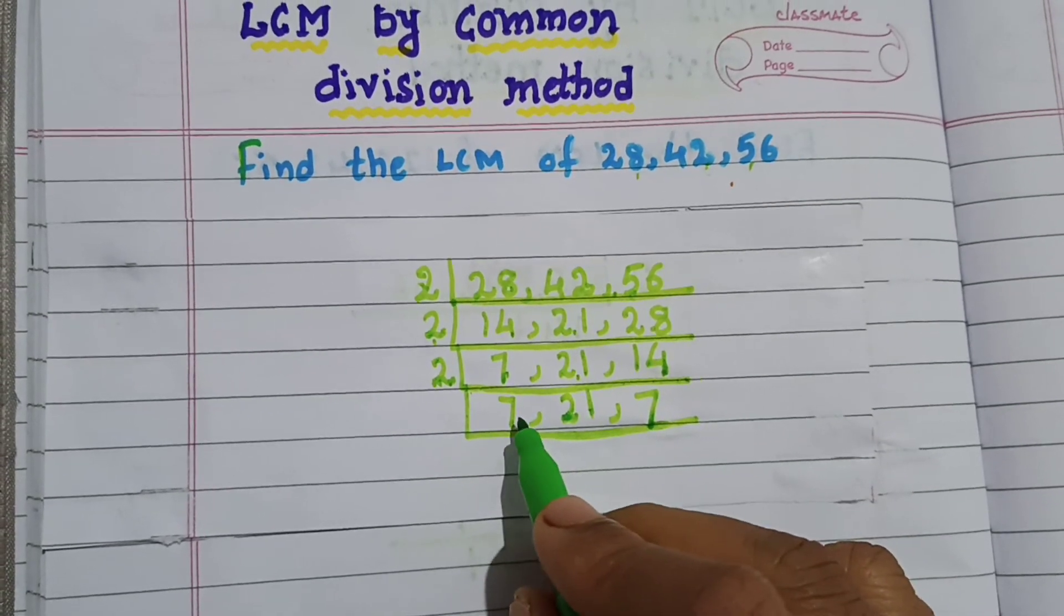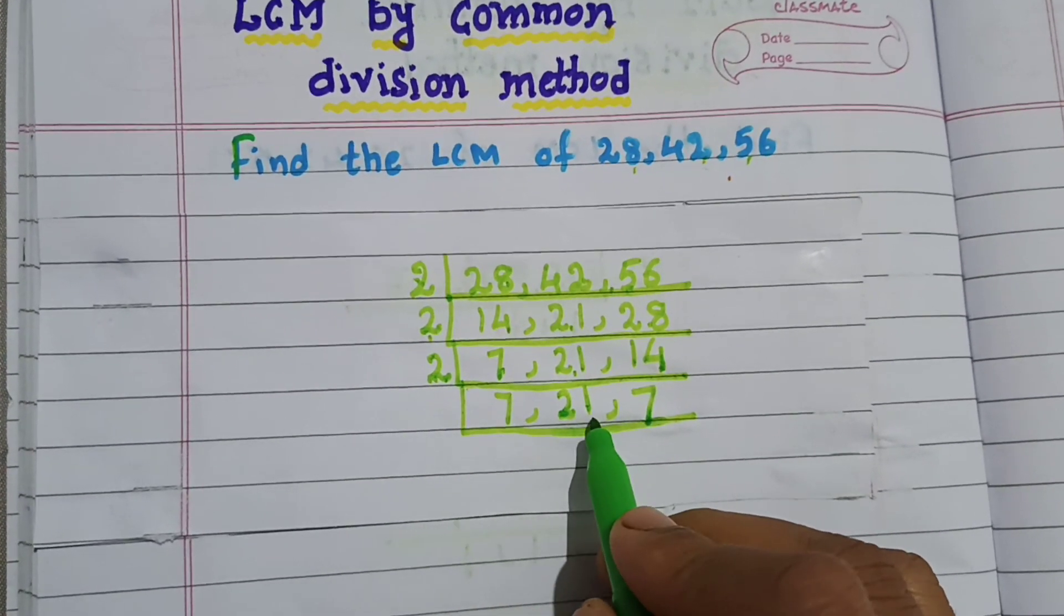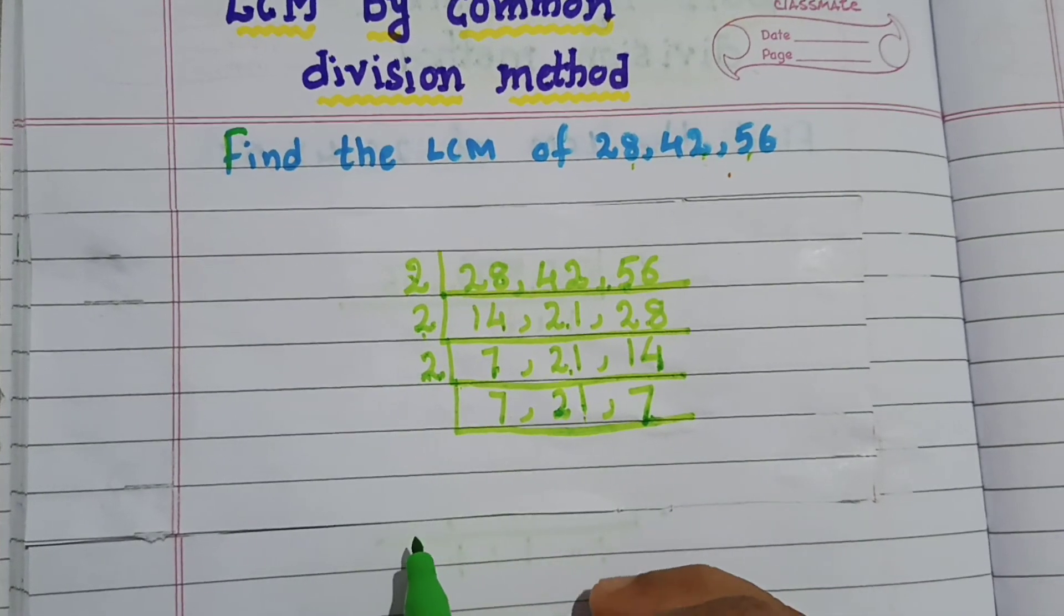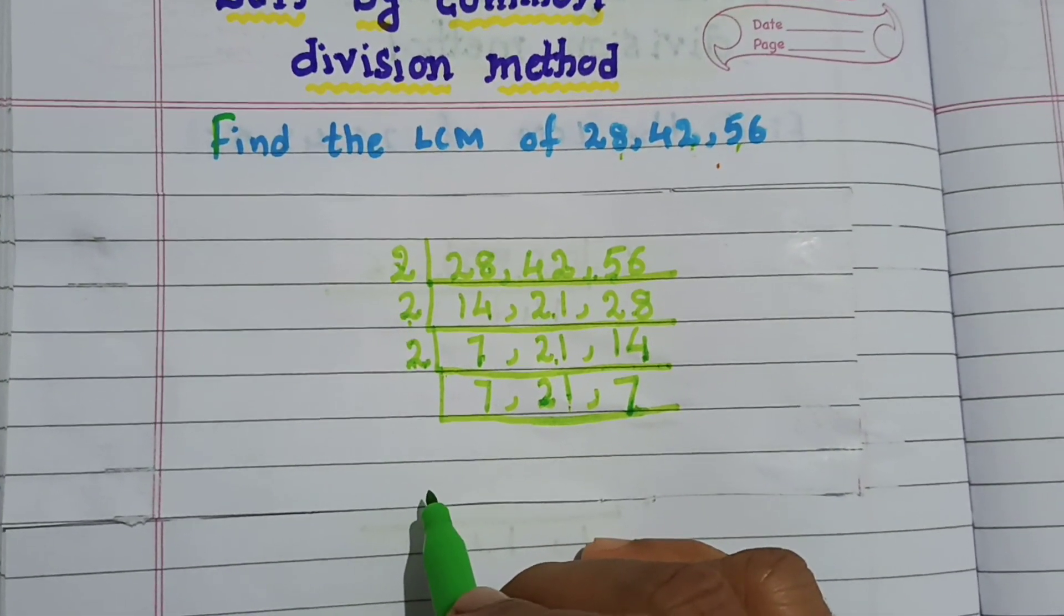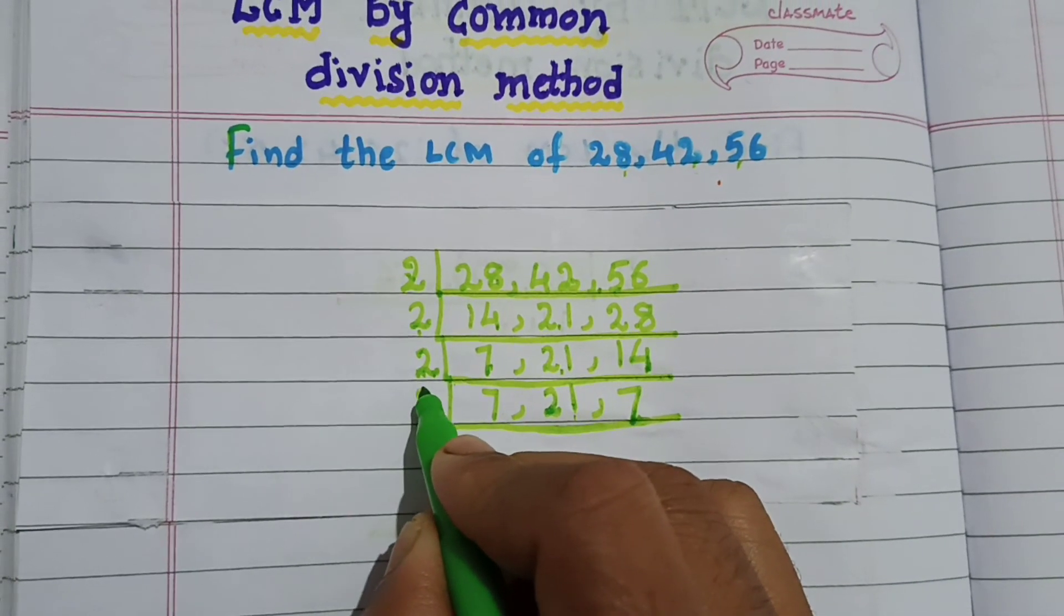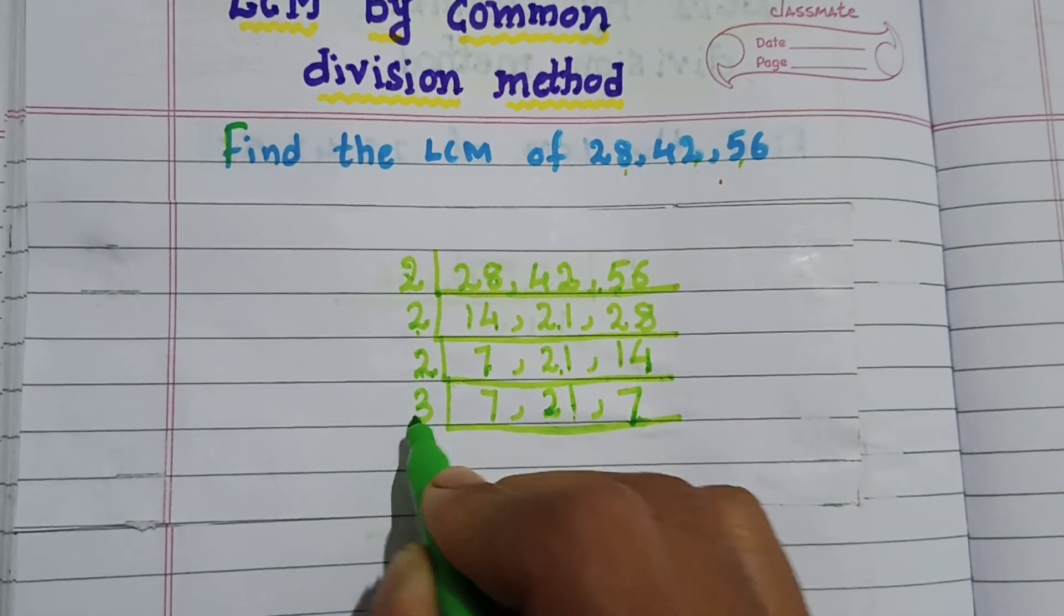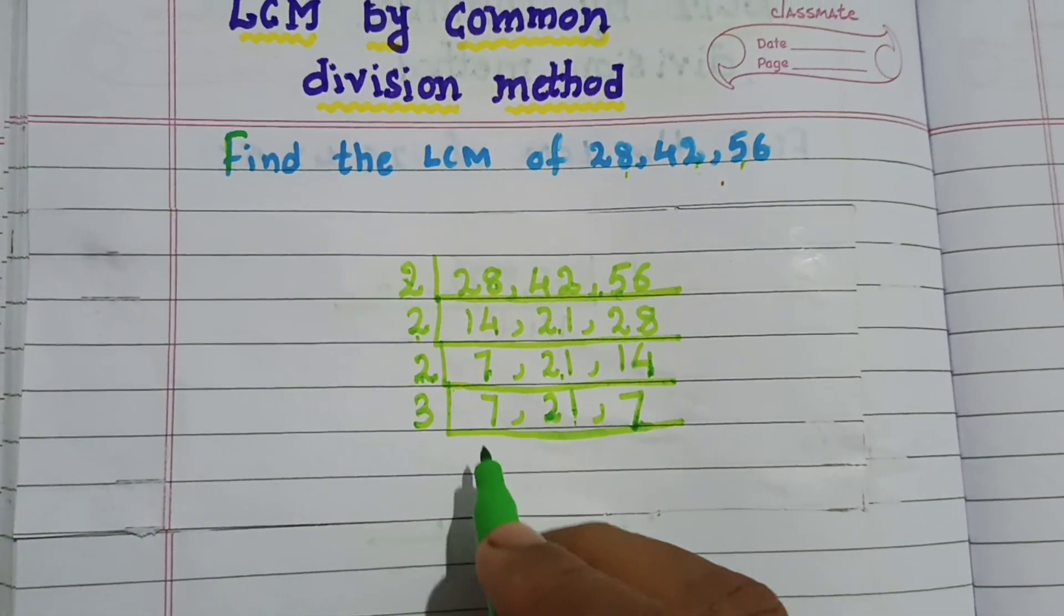Now, 7 does not divide by 2. 21 does not divide by 2. So, go for the next prime number. The next prime number is 3. I am considering the next prime number, 3.